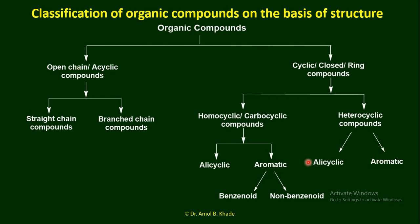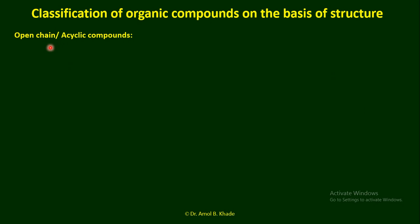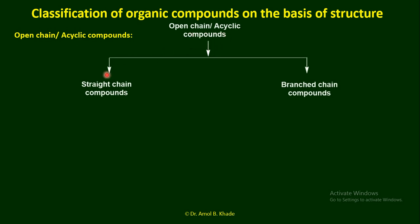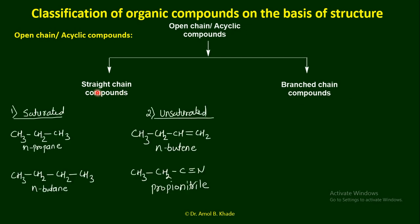Now we will see examples one by one to understand these classifications. Organic compounds can be divided into open chain — no ring — which is acyclic, and cyclic — where a ring is present. Open chain or acyclic compounds can be categorized into straight chain and branched chain. Straight chain compounds can be further divided into two types: saturated and unsaturated.